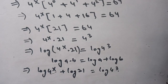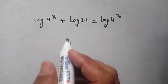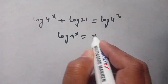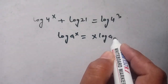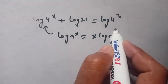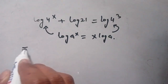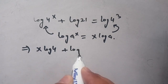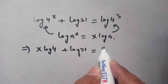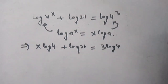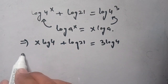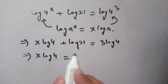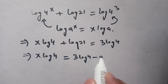We also know that log(a^x) equals x times log(a). Applying this identity, we get x times log(4) plus log(21) equals 3 times log(4). Rearranging: x times log(4) equals 3 times log(4) minus log(21).